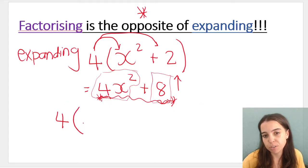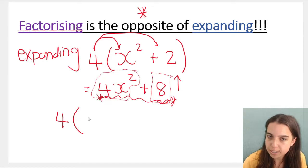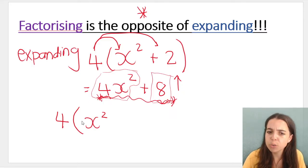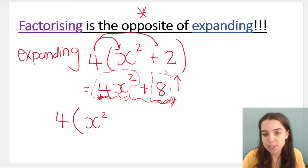Then I open up a set of brackets like that, and I take my first term, which is 4x squared, and I divide it by 4 to get x squared. Then I divide 8 by 4 and I get 2.